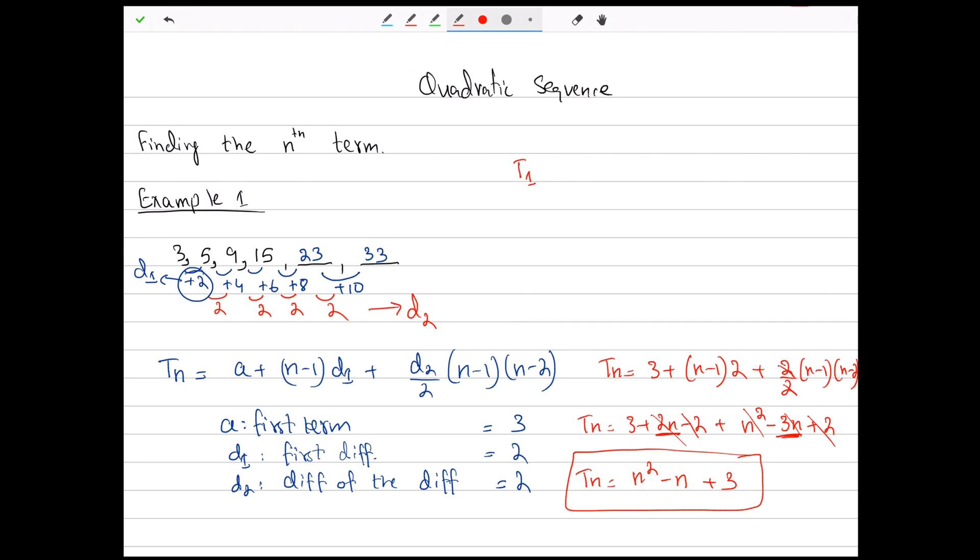If you plug in n equals 1, let's find out: 1 squared minus 1 plus 3. 1 squared minus 1 is zero, zero plus 3 equals 3. So that means t1 equals 3, and we can see that the first term is in fact equal to 3.